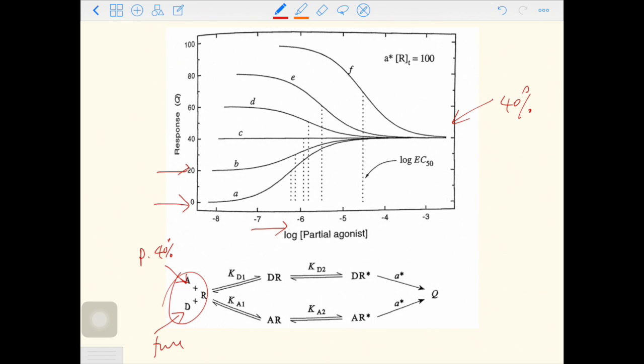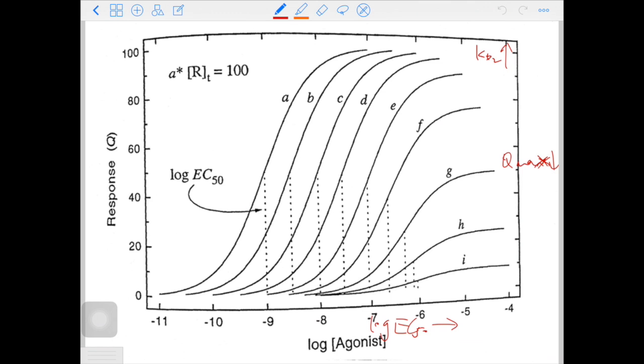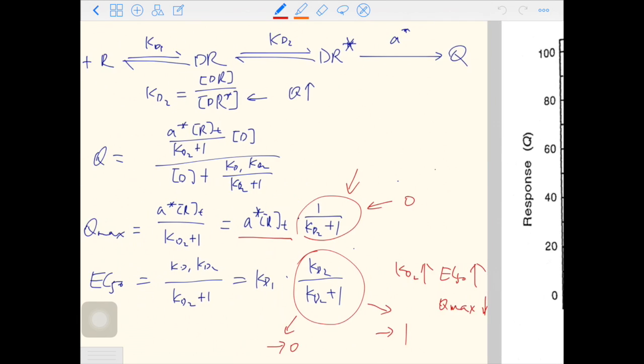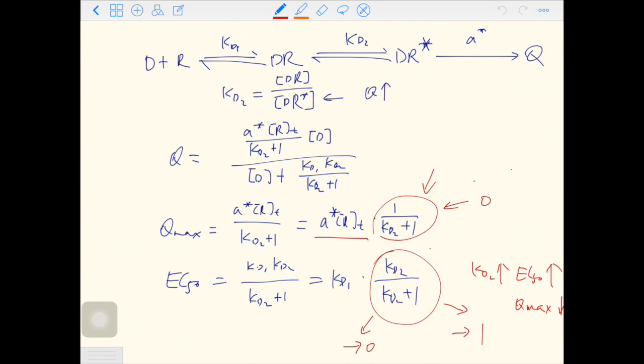When you add more partial agonist, the response will increase. So when the concentration of full agonist in the system increases, the initial response will increase as well. The take-home message for the partial agonist model is that when Kd2 increases, Qmax will decrease and EC50 will increase.